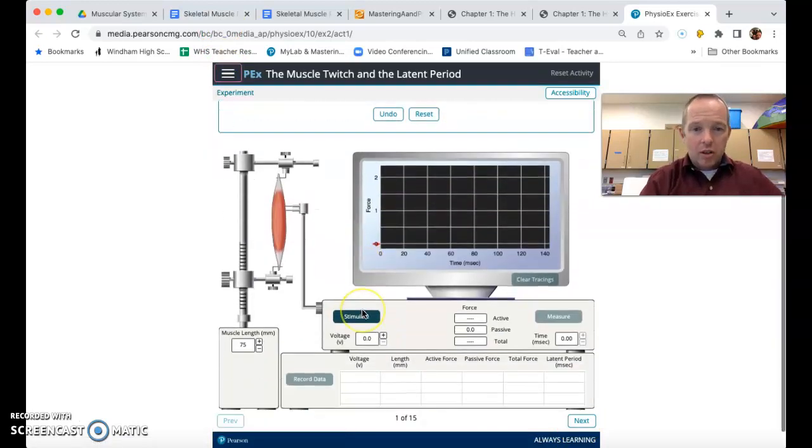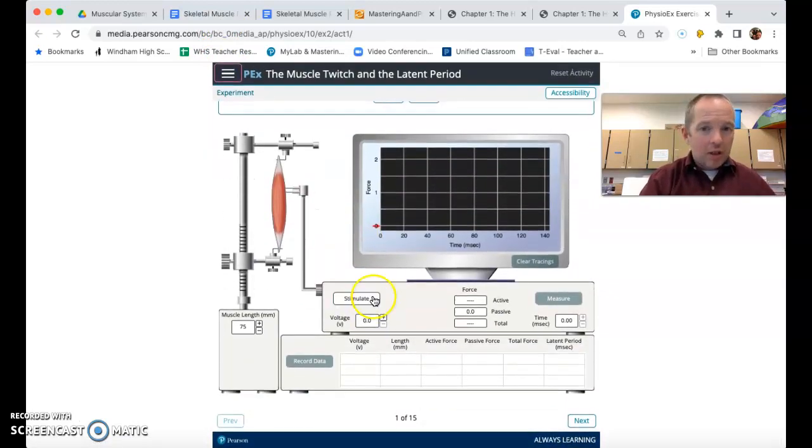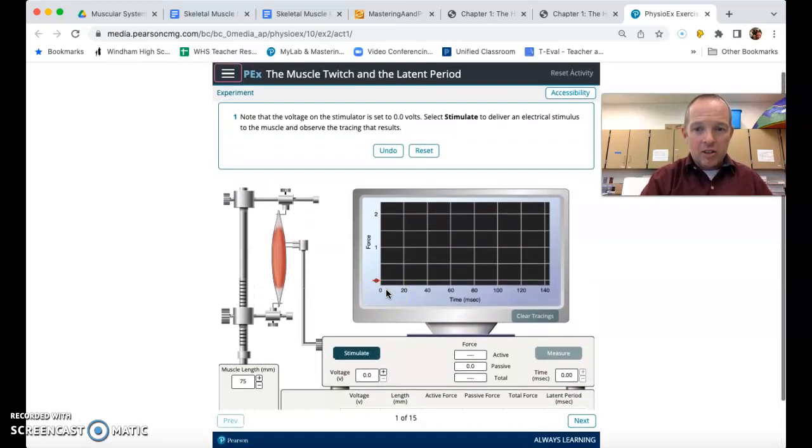And we'll jump right in. So the nice thing about these is that it tells you all the directions. So I'm going to jump right in quickly and we are going to stimulate this muscle. This is the hamstring muscle of a frog that we would extract from the back of its legs. Obviously, we're not doing that. So this computer simulation is much less gory.